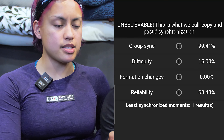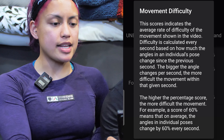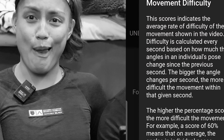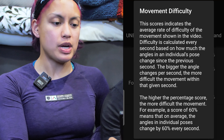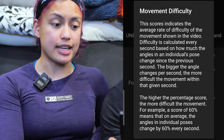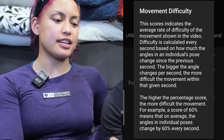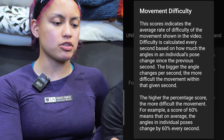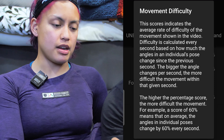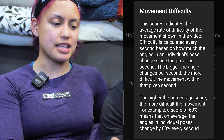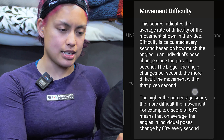The next one is difficulty, which is at 15. Movement difficulty: the score indicates the average rate of difficulty for the movement shown in the video. Difficulty is calculated every second based on how much the angles in an individual's pose change since the previous second. The bigger the angle changes per second, the more difficult the movement. The higher the percentage score, the more difficult the movement — for example, a score of 60% means that on average the angles in an individual's pose change by 60 degrees every second.